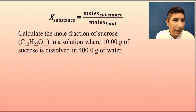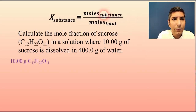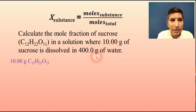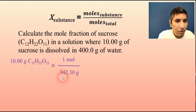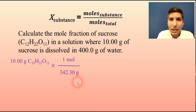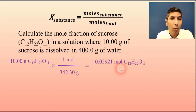Let's try an example: calculate the mole fraction of sucrose (C₁₂H₂₂O₁₁) in a solution where 10.00 grams of sucrose is dissolved into 400.0 grams of water. We need moles of both items since it's mole fraction, not gram fraction. Take 10 grams of sucrose: one mole over 342.3 grams per mole — cancel grams and divide to get 0.02921 moles of sucrose.